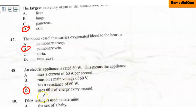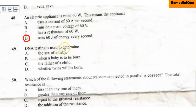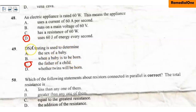Question number 49: DNA testing is used to determine — A. The sex of a baby, B. When a baby is to be born, C. The father of a child, D. Whether twins will be born. The correct option is C — the father of a child. DNA testing is used to determine the paternity of a child. If a man disputes that a child is his, a DNA test can confirm or deny whether that is true.